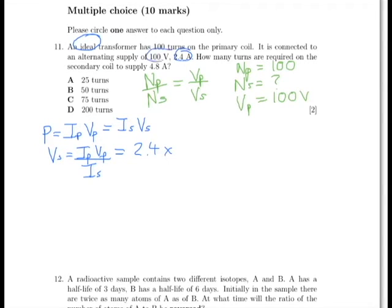multiplied by the voltage on the primary, 100 volts, divided by the current on the secondary, which is 4.8. This gives us an answer of 50 volts.